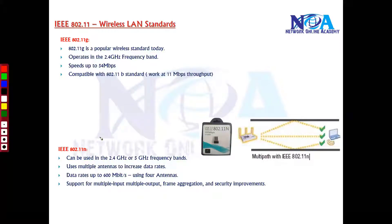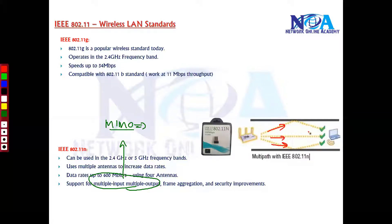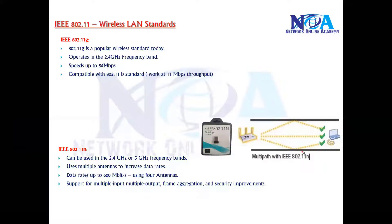To understand how such high throughput is achieved, 802.11n uses something called Multiple Input Multiple Output, or MIMO. This mechanism increases the capacity of a radio link by using multiple transmitting and multiple receiving antennas simultaneously, effectively sending and receiving more than one data signal at the same time.